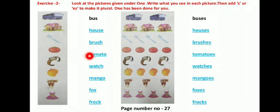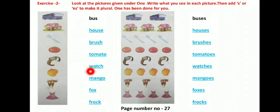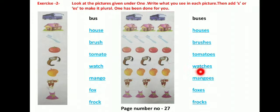This is a picture of tomato. Write T-O-M-A-T-O, tomato. There are four tomatoes, so you write T-O-M-A-T-O-E-S: tomatoes — you add ES to make tomato plural. Next, watch — write W-A-T-C-H, watch. There are three watches, so you add ES: W-A-T-C-H-E-S, watches. ES is added for making watch plural.